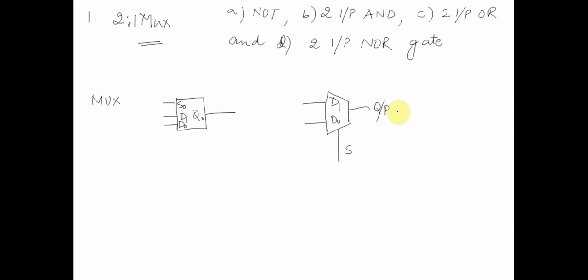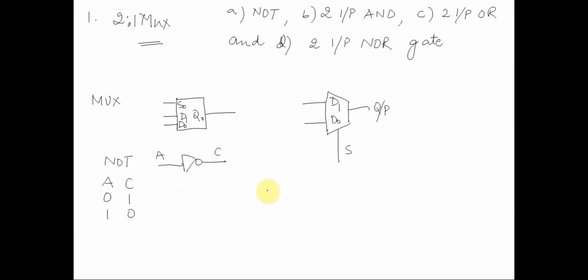Now if we have to obtain a NOT gate behavior — a NOT gate has input A and output C. If we create a truth table: if input is 0, output is 1; if input is 1, output is 0. This means I can construct a NOT gate using a MUX if and only if we connect the select line of the MUX to A.